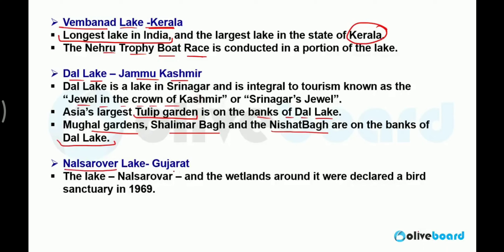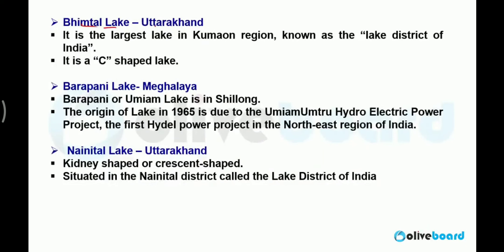Nal Sarovar Lake is situated in Gujarat and was declared a bird sanctuary in the year 1969. Bhimtal Lake is situated in Uttarakhand. It is a sea-shaped lake and Uttarakhand is known as the lake district of India.